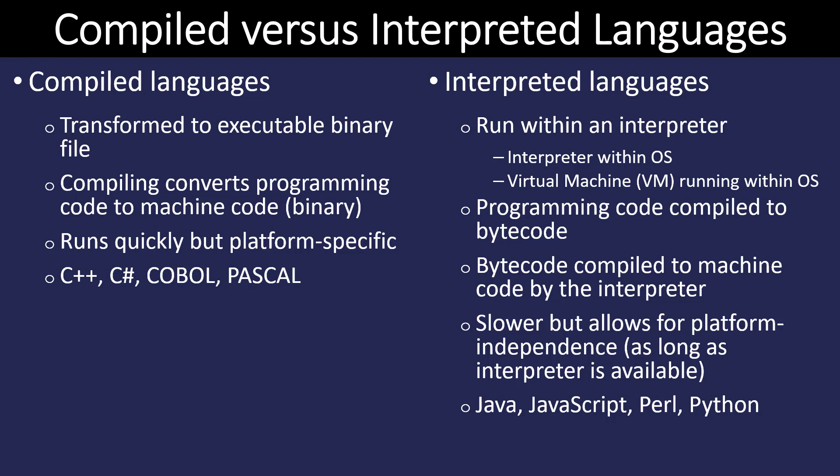An interpreted language does not need to be compiled to run. It runs in the context of something called an interpreter, and the code is converted into machine code when it's run. That means the program runs a little slower, but it also means you can likely run the program on almost any platform. So there are advantages and disadvantages to each. Some examples of interpreted languages are Java, JavaScript, Perl, and Python.